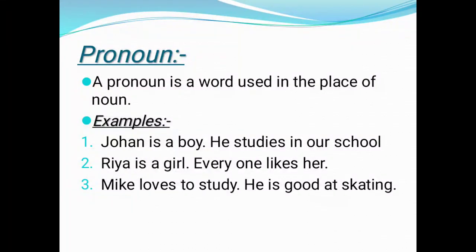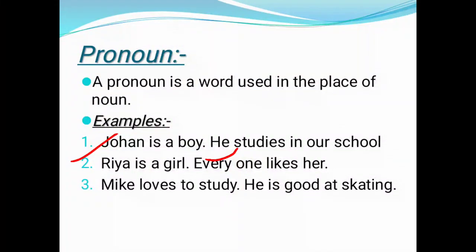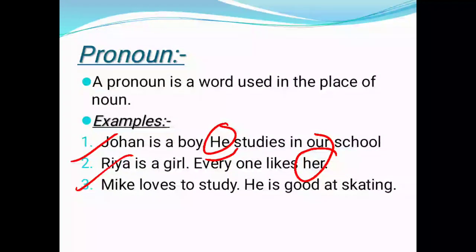Let's see examples of pronouns. 'Johan is a boy. He studies in our school.' In this sentence, Johan is the noun and the word replacing Johan is the pronoun — that is 'he.' Next: 'Ria is a girl. Everyone likes her.' Here, Ria is our noun and 'her' is the pronoun, because the word 'her' is replacing the noun Ria. Instead of Ria, we are writing 'her.'